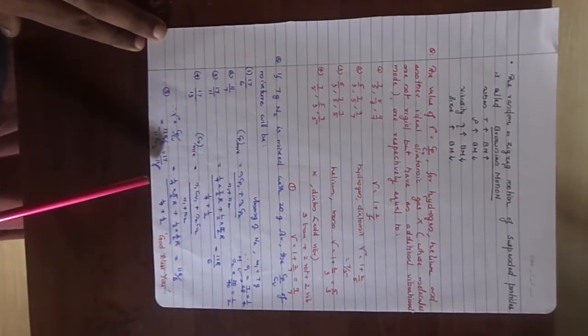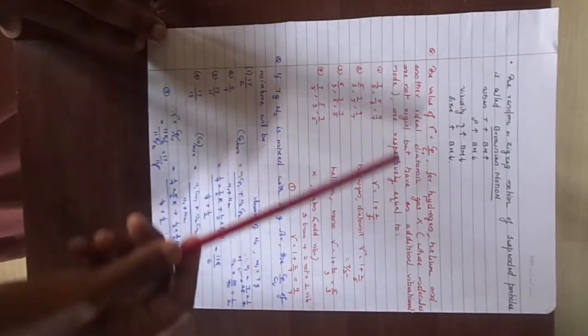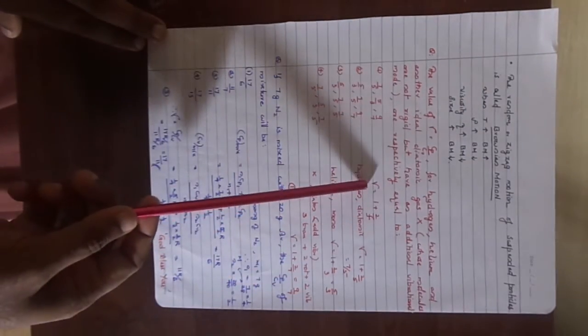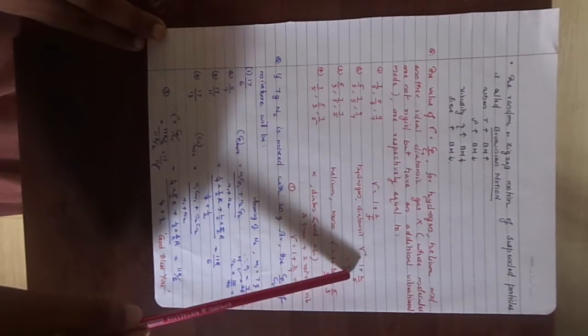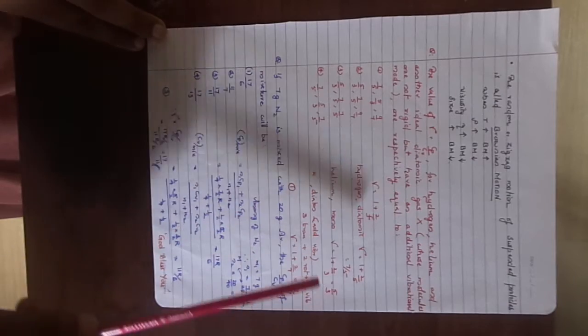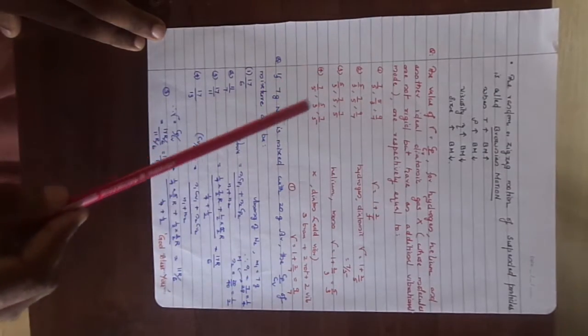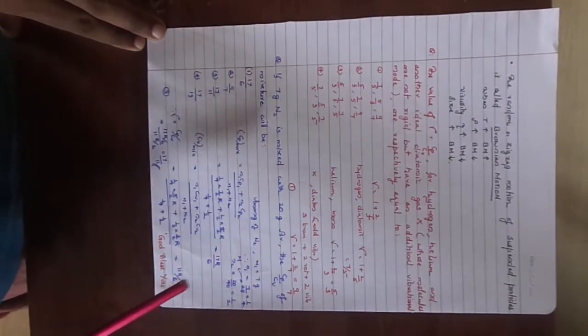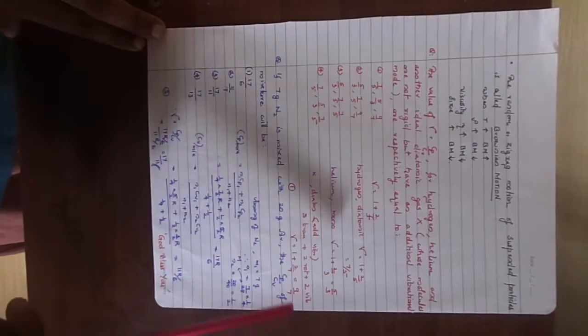And we are waiting with two good questions. The value of gamma for hydrogen, helium and another ideal diatomic gas whose molecules are not rigid but have an additional vibrational mode are respectively equal to? We can use the concept gamma equal to 1 plus 2 by F. But for hydrogen gas, for the diatomic gas, F is equal to 5, so 7 by 5. For helium monoatomic, so 5 by 3. But in the second case that diatomic molecule has an additional vibrational mode. So we get the answer as 9 by 7. For each vibrational mode there are two degrees of freedom, so 5 plus 2 is 7. So we get the answer as 9 by 7. A good question, a NEET question.